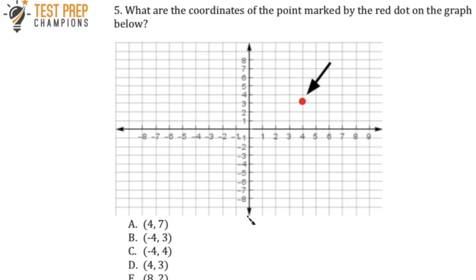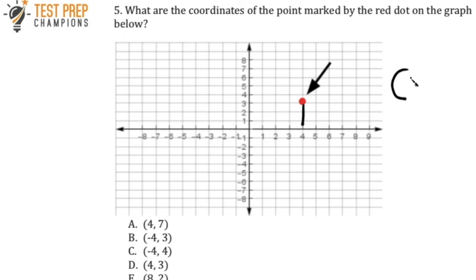Whenever you want to read a point that's on a graph, what I recommend is you first identify the point, which is right here, and you want to find the point on the x-axis that corresponds to the dot. So the x-axis being four — the x-coordinate of this dot is going to be four.